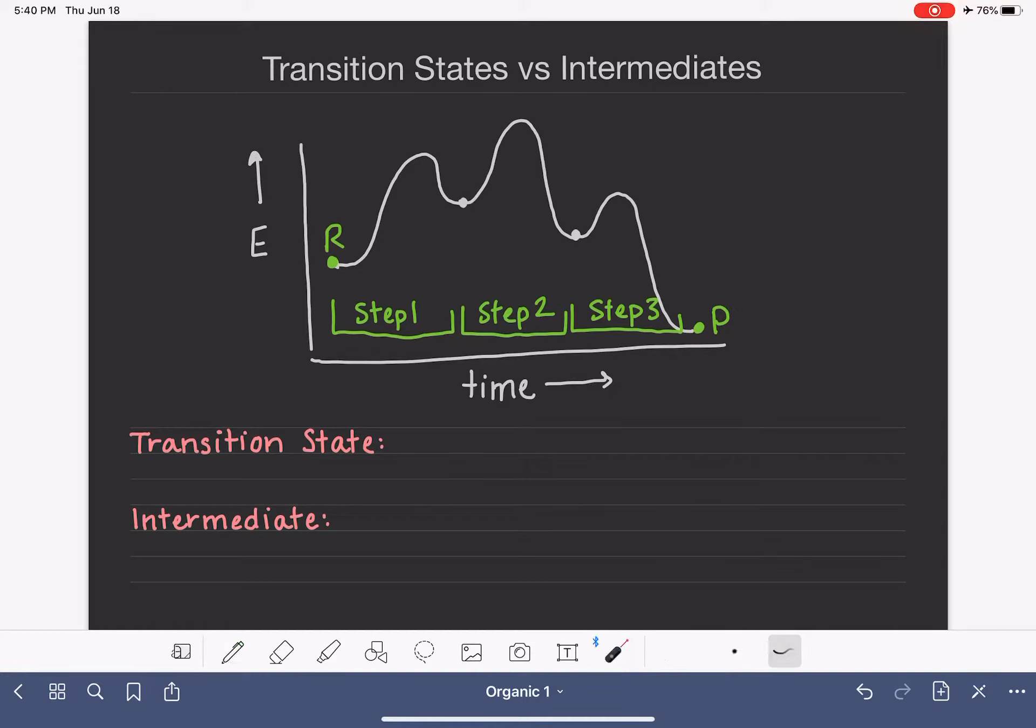We have names for these molecules that are formed on the way from reactant to product. Those substances are called intermediates, which I'm going to give an I in the diagram. The intermediates exist at every single downward point in the energy diagram in between the reactant and the product.